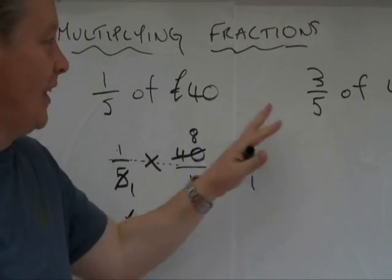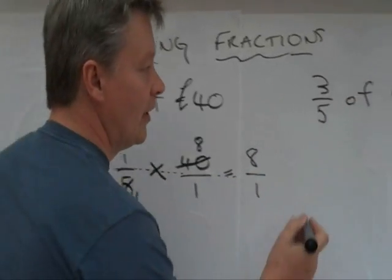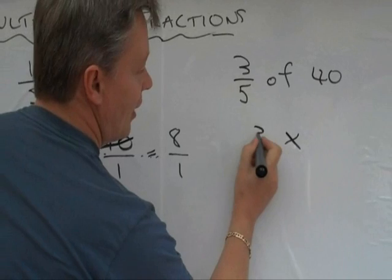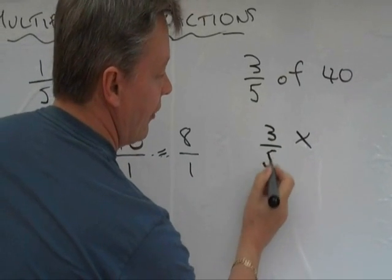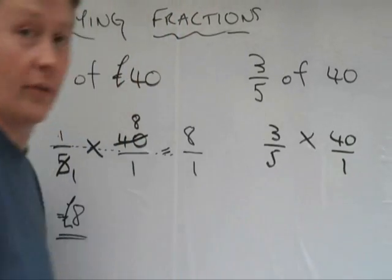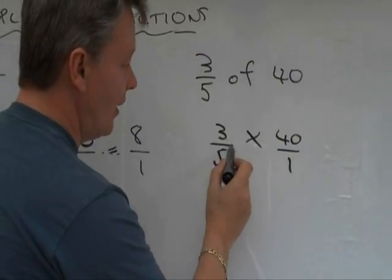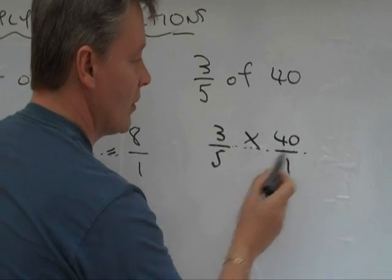So I'm going to change that of to a multiply. I'm going to say 3 over 5 times 40 over 1.